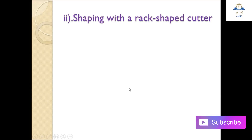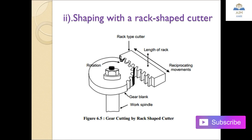Shaping with the rack-shaped cutter: a rack-type cutter reciprocates and also has vertical movement, similar in concept to a bay blade. The gear blank is mounted on the work spindle and rotates while the rack-shaped cutter reciprocates, performing the gear cutting operation.